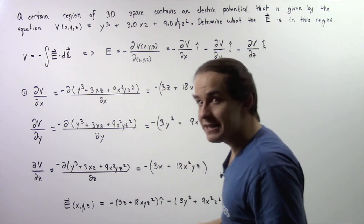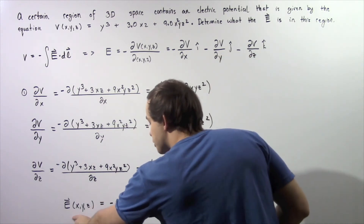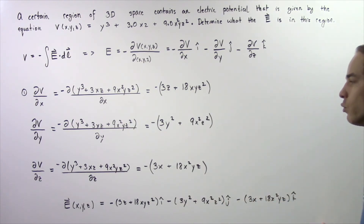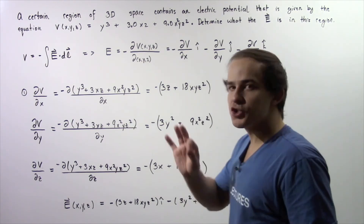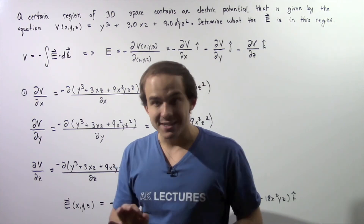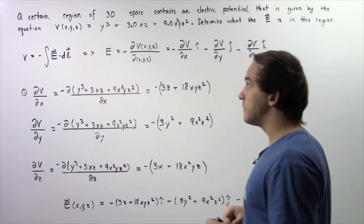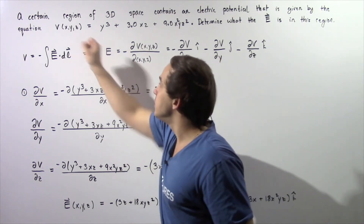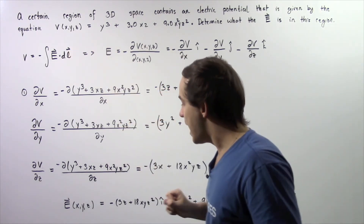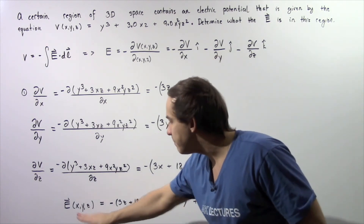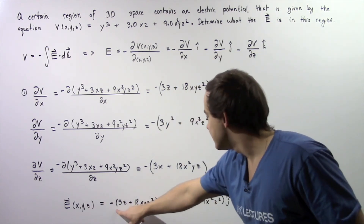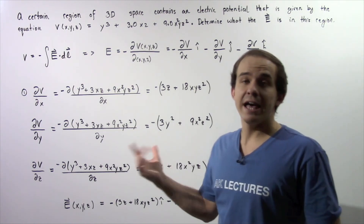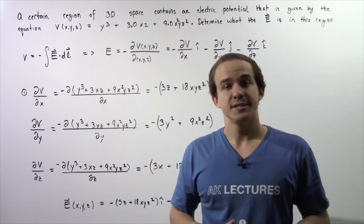The electric field vector equation with respect to x, y, and z is equal to the following. Notice that if we know what the x, y, and z coordinate is in this particular region of space, we can simply calculate the voltage by plugging it into our equation, and we can calculate our electric field by plugging in those coordinates, solving it, and calculating what the electric field vector is at that particular point in space.